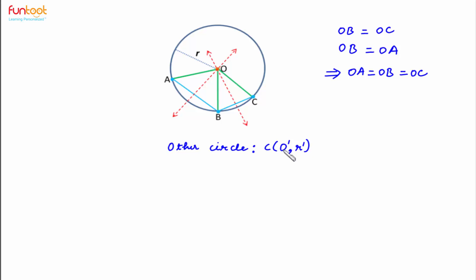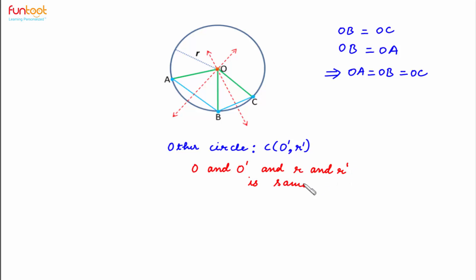Then the perpendicular bisectors of chords AB and BC in this case should intersect at O′, but we have seen previously that the perpendicular bisectors of AB and BC intersect at point O. We know that two lines can intersect at one and only one point. This implies O and O′ are the same, and R and R′ are the same. So this implies that no other circle can pass through the three given non-collinear points A, B and C except the first circle which we have drawn.